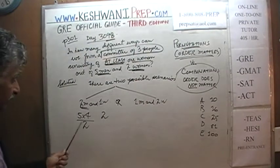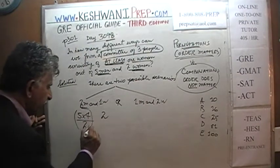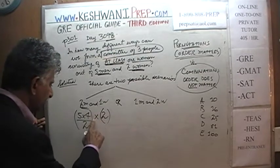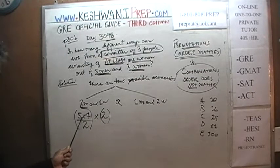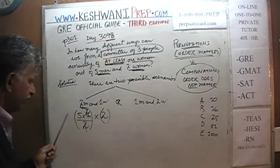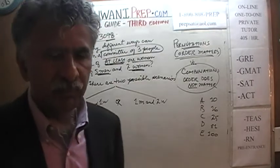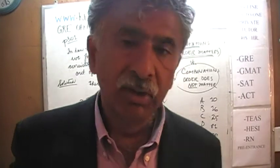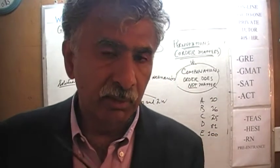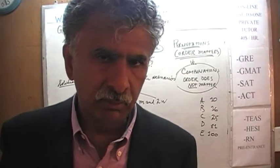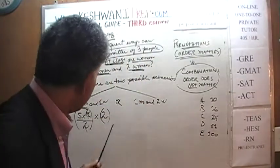What do we do with these two figures? We do not add them — we multiply them. Because for each of the possibilities of choosing two men, we have two possibilities of choosing a woman. Two cancels out with four, so there are ten possibilities of choosing two men out of five. And for each of those ten ways, we have two choices of woman, so it is ten times two — 20 ways.